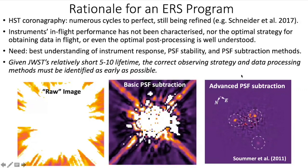You might ask why we don't just do this during normal cycles. There are a lot of lessons learned from Hubble Space Telescope — the work with coronagraphs on HST really took numerous cycles to perfect and is still being refined 20-something years later. For JWST, the in-flight performance of the instruments has not been characterized, nor has the optimal strategy for obtaining data in flight, and we don't fully understand yet what the optimal post-processing steps are. We really need to understand instrument responses, the stability of the point spread functions, and specifically the subtractions of the PSF. Given JWST's relatively short lifetime of 5 to 10 years, we need to identify the correct observing strategy and data post-processing methods as early as possible to maximize JWST's scientific potential.